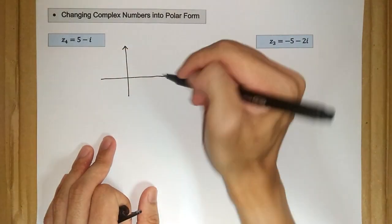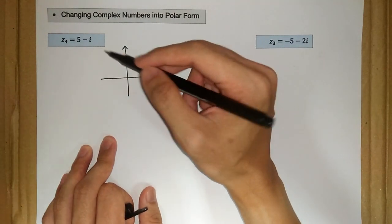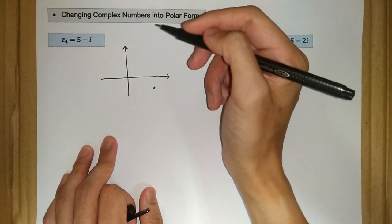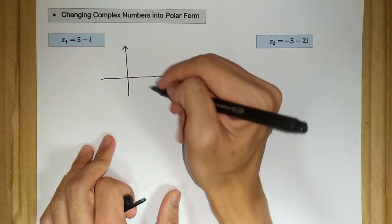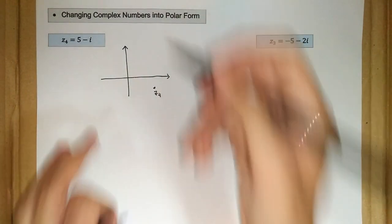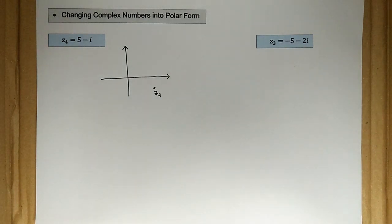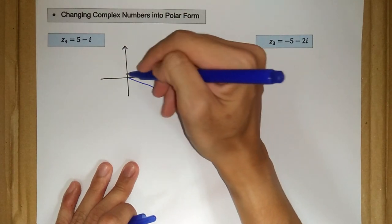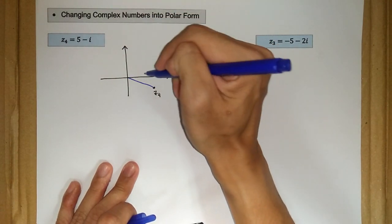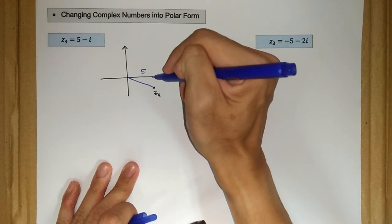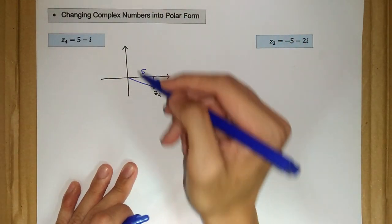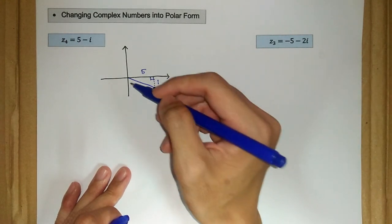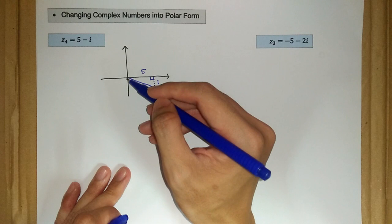So this is our Argand diagram. We have 5, negative 1, so it must be in the fourth quadrant. So let's say this is our z₄. z₄ takes 5 units to the right, so this is 5 units to the right, and also one unit here.